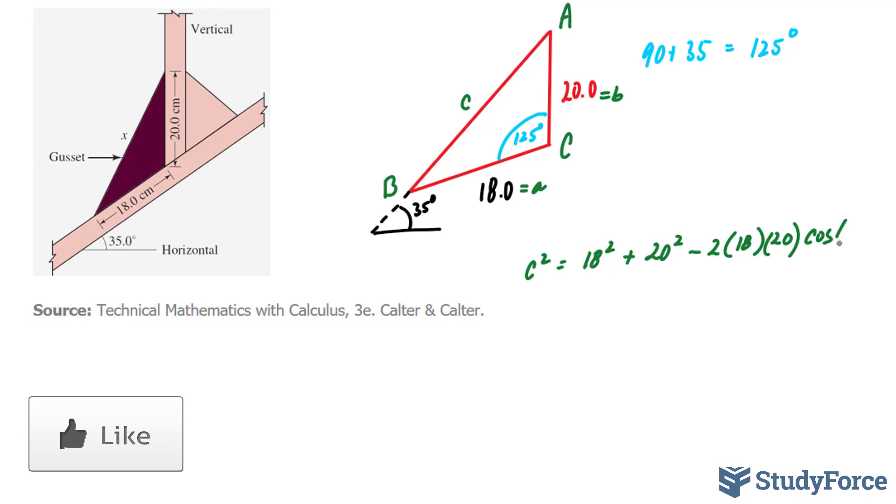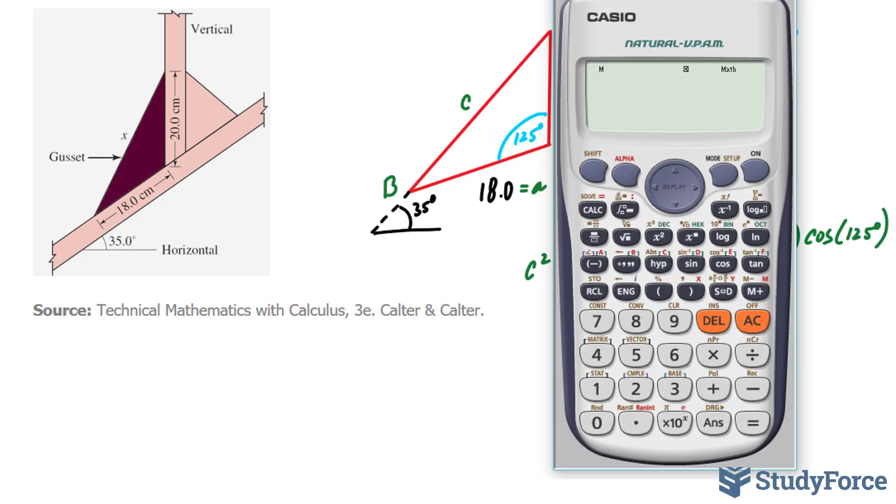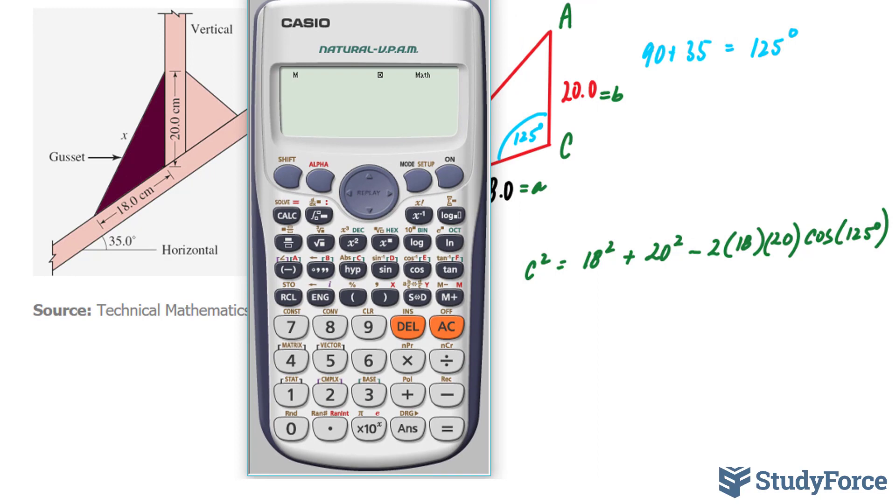Using our calculator, the first thing that we will evaluate is 18 squared plus 20 squared. 18 squared plus 20 squared. And that gives us 724.